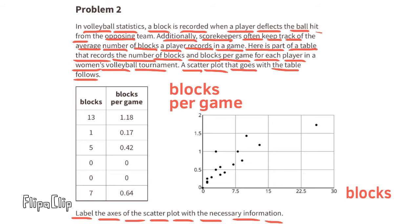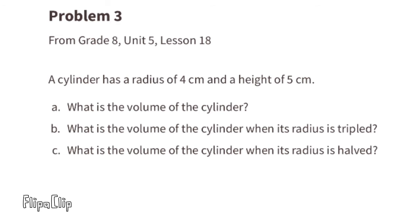Initially I thought this looked pretty unusual because there were 0.5 blocks and 7.5 blocks, 1.5 blocks, but then I re-read the information and it said that they were keeping track of the average number of blocks a player records in a game. So if this is the average number of blocks, that would make sense. Problem number three from eighth grade Unit 5 Lesson 18.